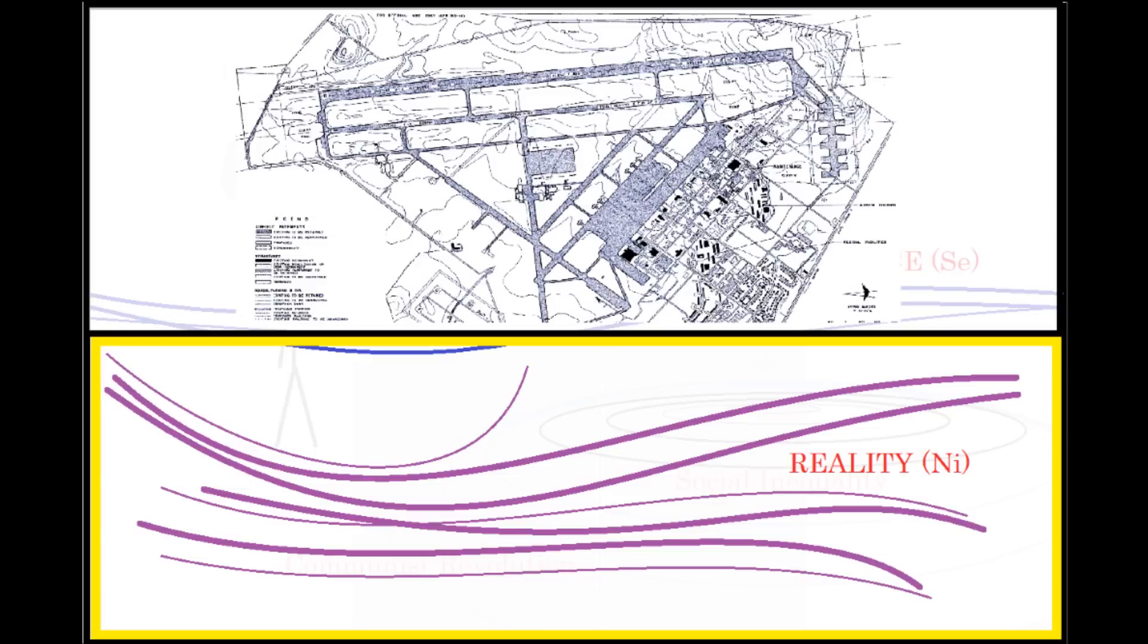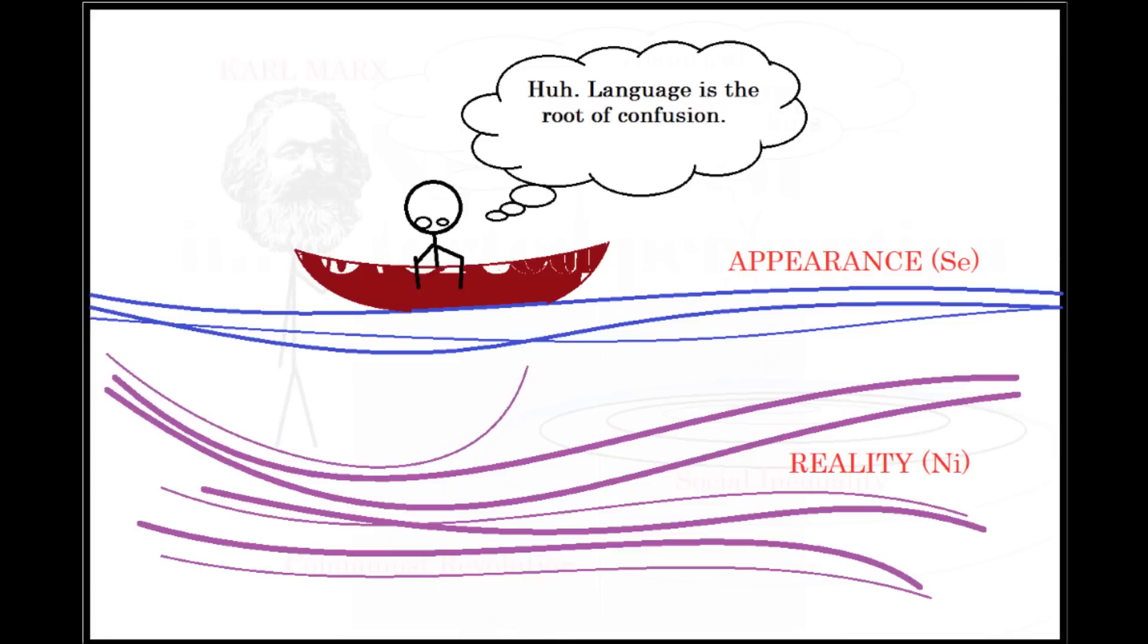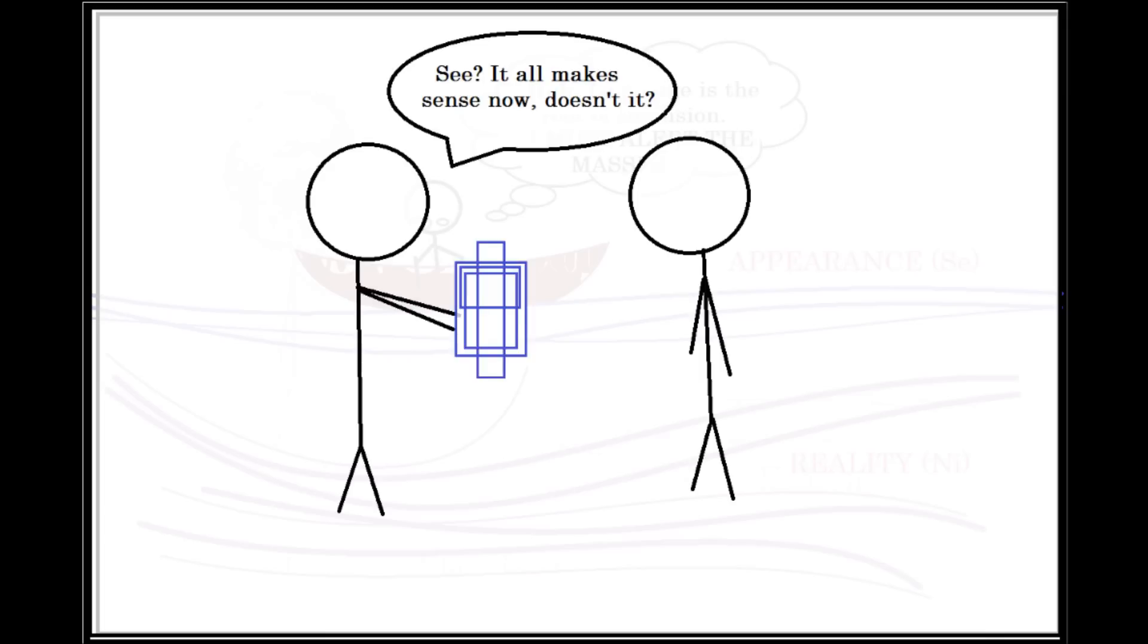But the INFJ's introverted realm is of intuition and thinking. Therefore, they are instead reconciling their intuitive insights with a valueless, logical, rational system, with a purely knowledge-oriented blueprint of the universe. Feeling only enters into the picture when the INFJ considers the implications of their ideas for others and their well-being. They are thus motivated instead to understand the universe in a rather ISTP way, and then to impart that knowledge to others in a way that will benefit them.